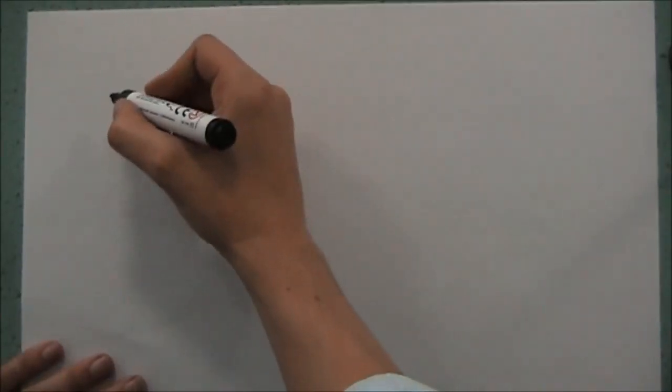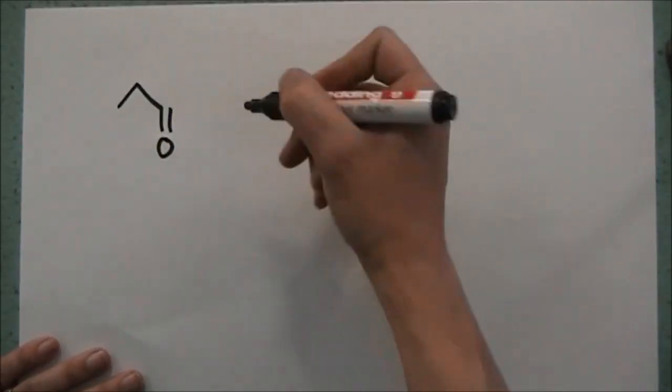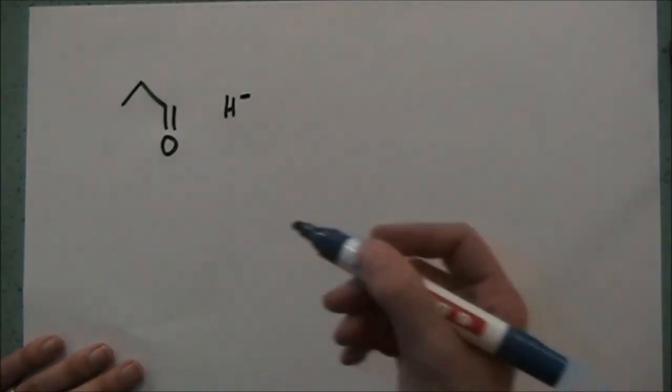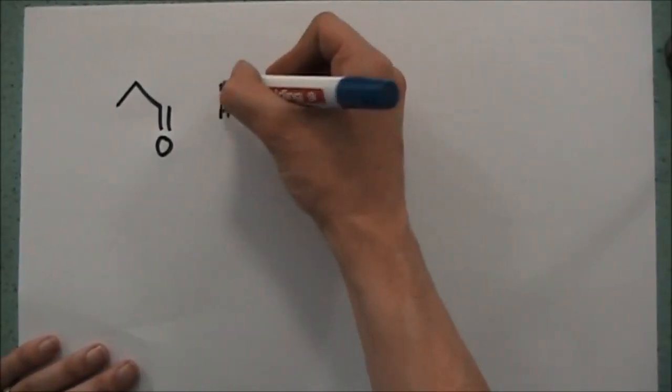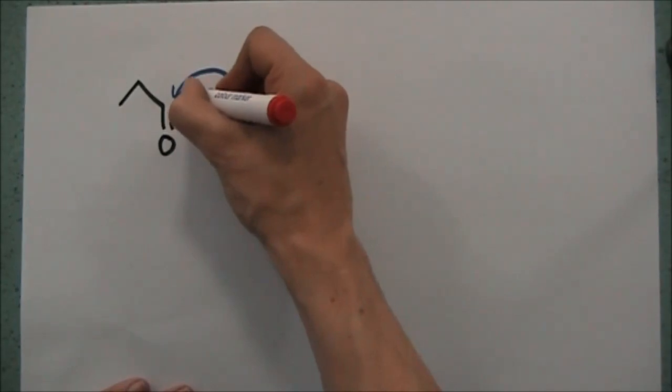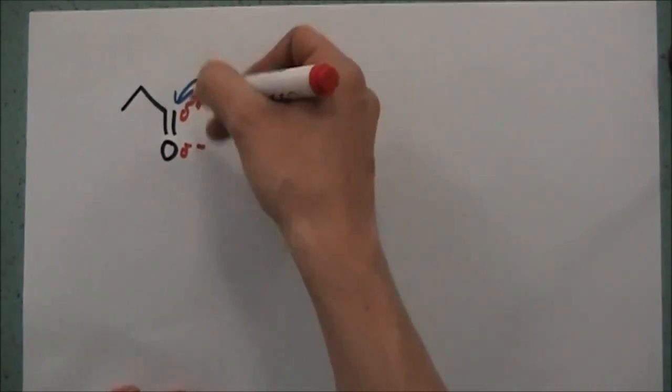We're going to look at the specific example now, and we're going to look at propanal reacting with a hydride ion. A hydride ion is produced with various types of reducing agent, but the one that you need to know about is sodium borohydride. And that has the ability to attack this carbon atom in the carbonyl group, because the carbonyl has a delta plus and a delta minus to go with it.